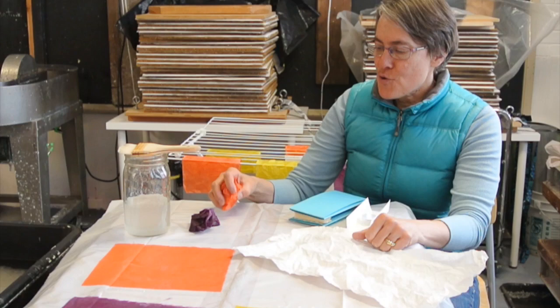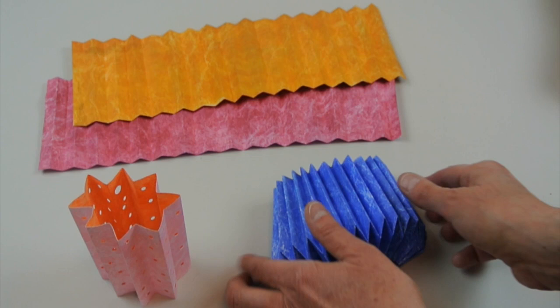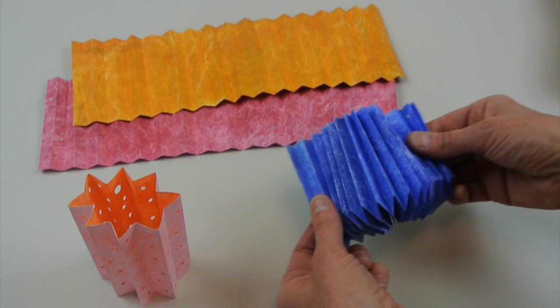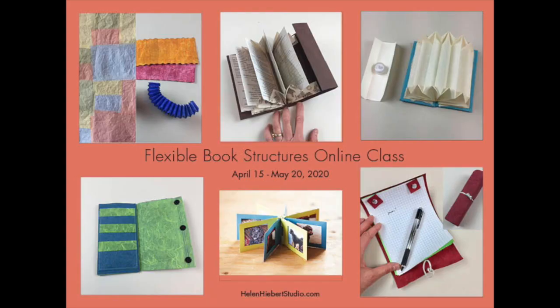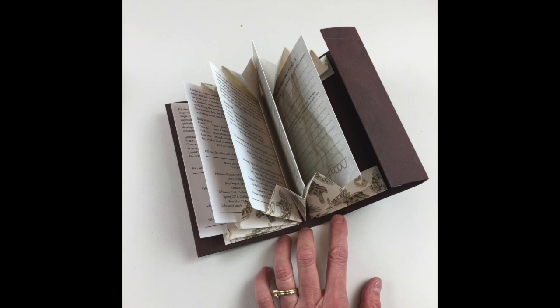We're going to coat hanji paper with konyaku paste and crumple it and knead it and make it into a cool paper cloth. We'll also explore staining Tyvek, a tough paper-like material that will fold into unique forms.